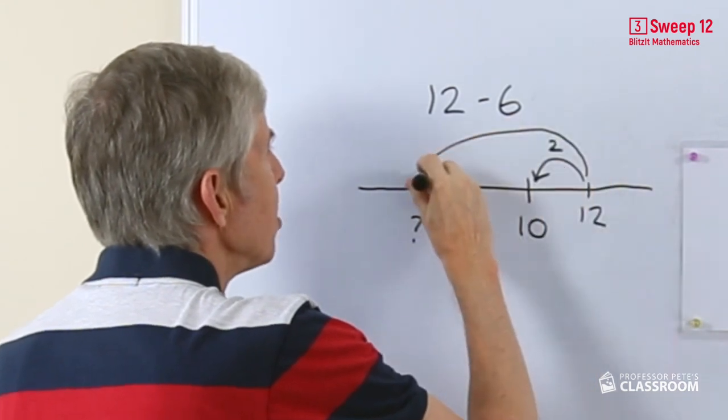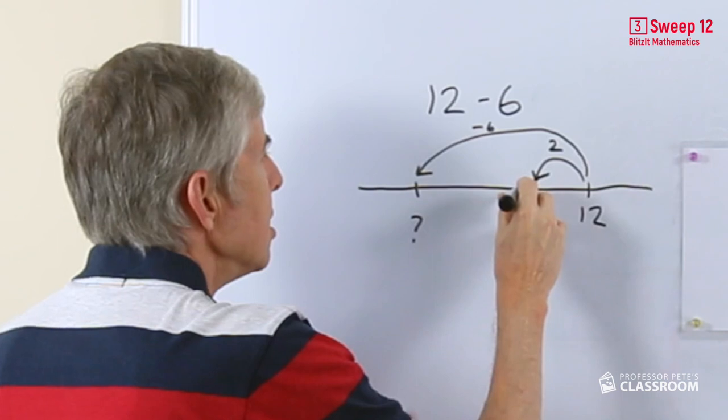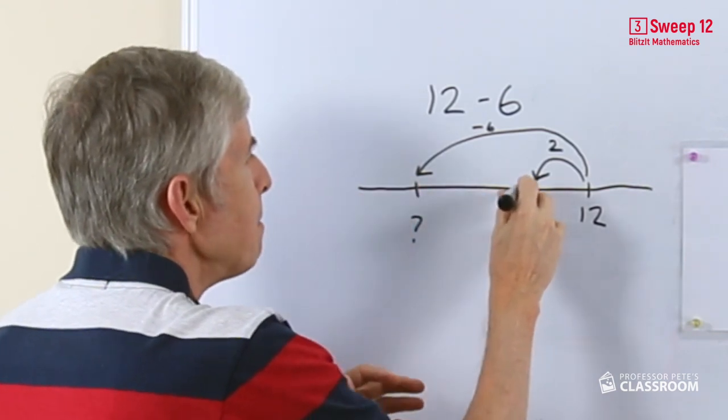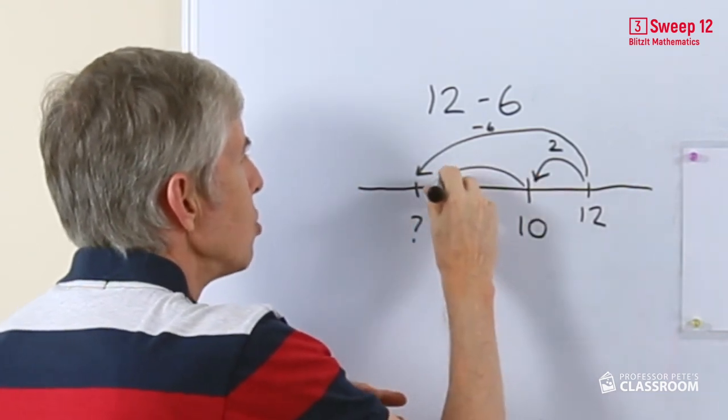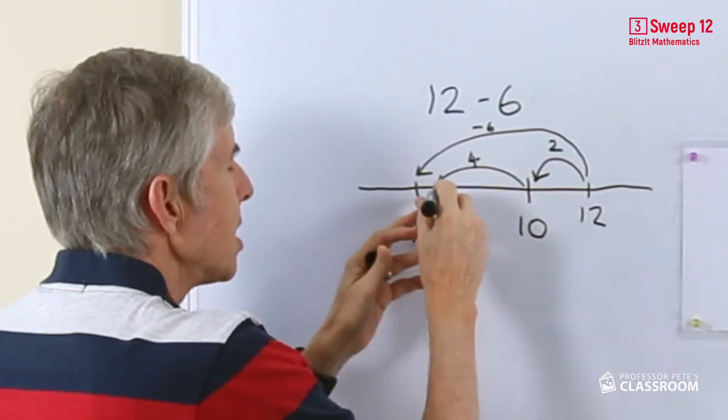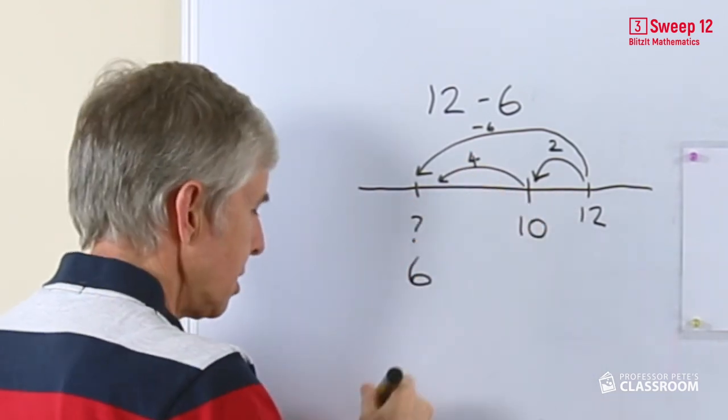This is a jump of 6 because we're taking away 6. So how far will this bit be? Because that's 2, this of course will be 4. So this number will be 10 take away 4, of course it's 6.